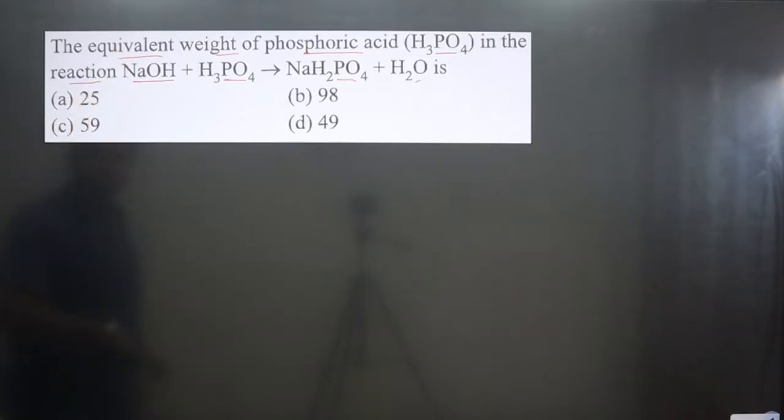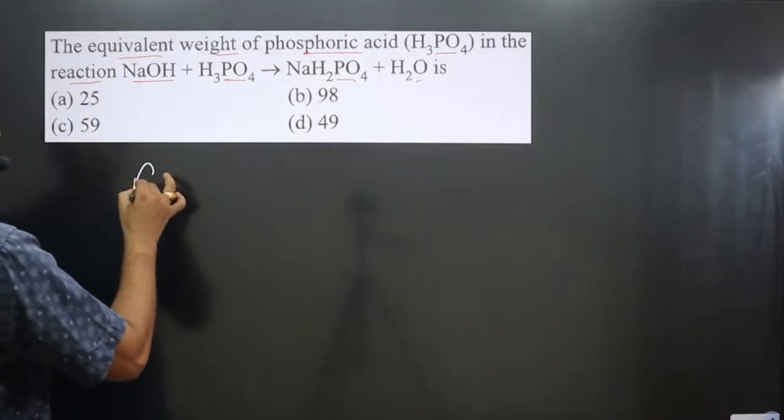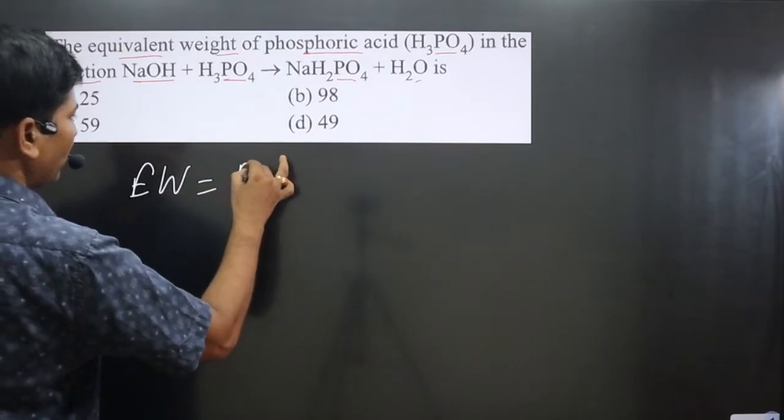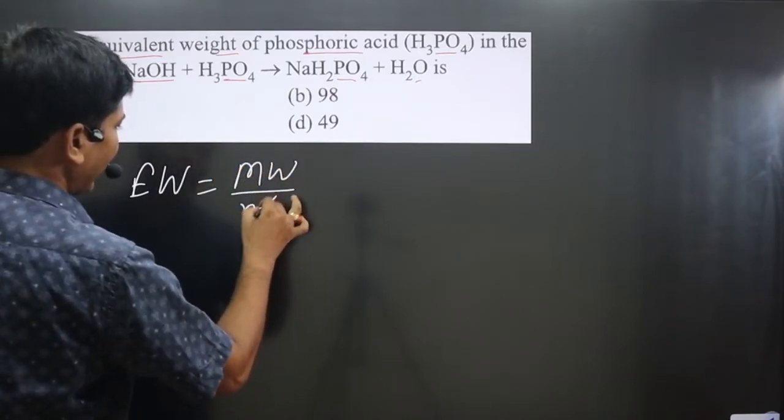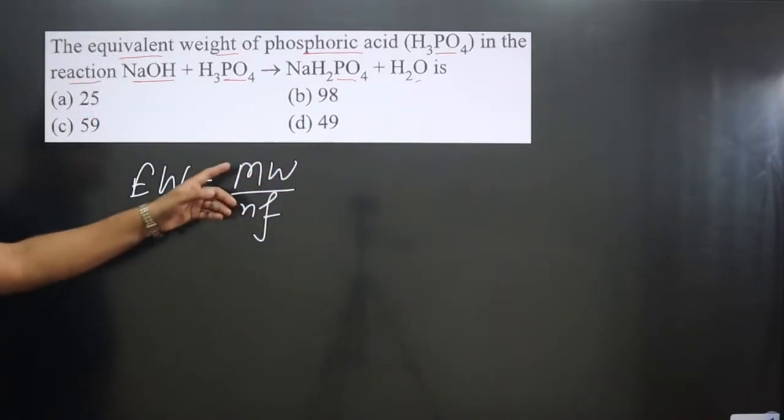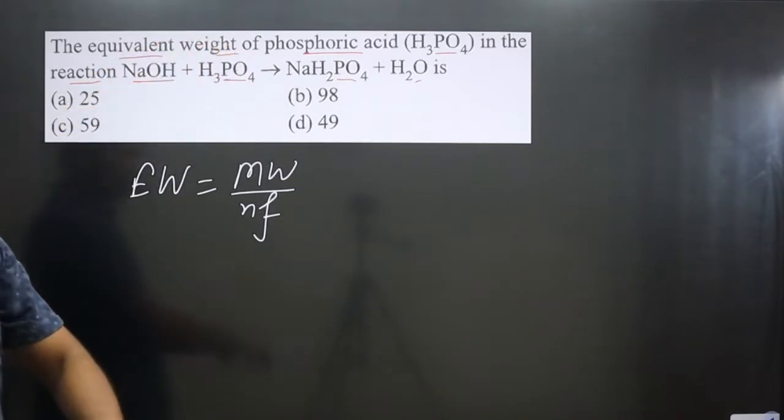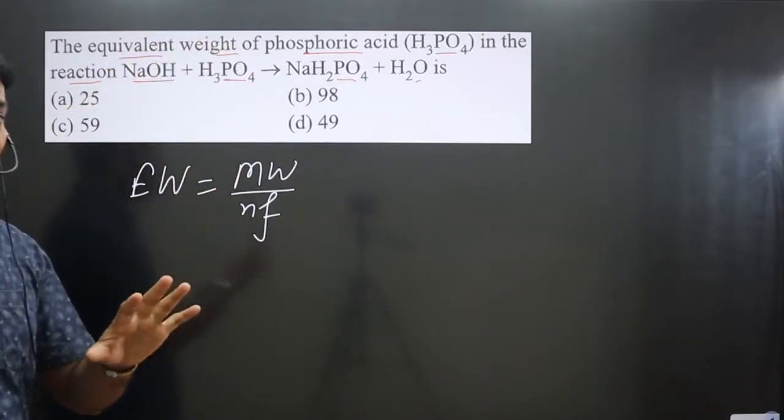The equivalent weight formula is: EW = MW/n-factor. We can calculate molecular weight using the periodic table, and the n-factor value from the given equation.